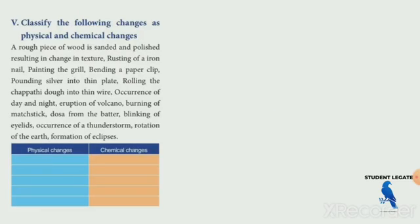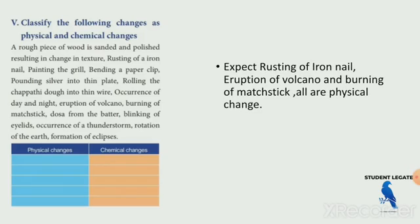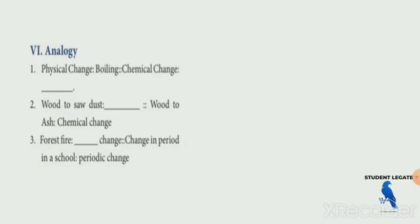Here is a list of things — identify whether they are physical changes or chemical changes. Rusting of iron, eruption of volcano, and burning of a matchstick are all chemical changes. Physical changes include boiling — not chemical changes. What is burning? Boiling and burning involve inflammation.